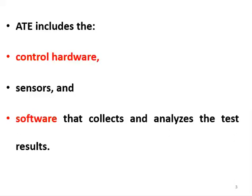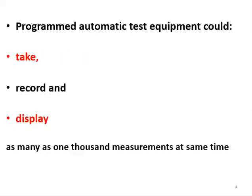The components of automatic test equipment are: hardware, sensors, and software. The hardware comprises the physical parts of the system. The sensors are connected to the device under test in order to sense the signal so that the ATE can interpret it. The software must have a program written and uploaded to the hardware for control purposes, collecting and analyzing all test results.